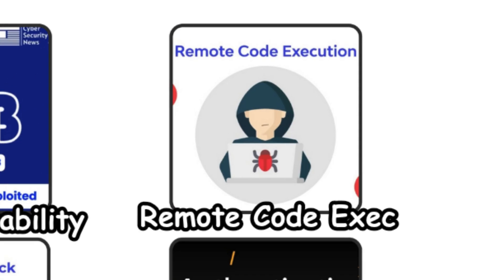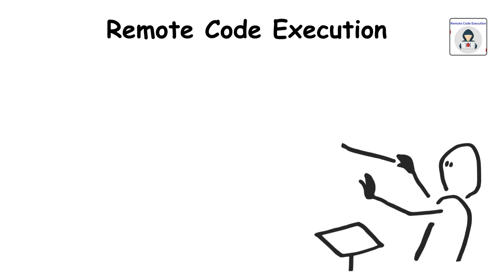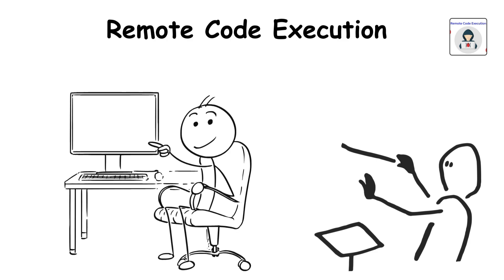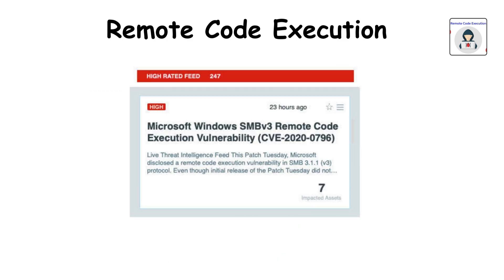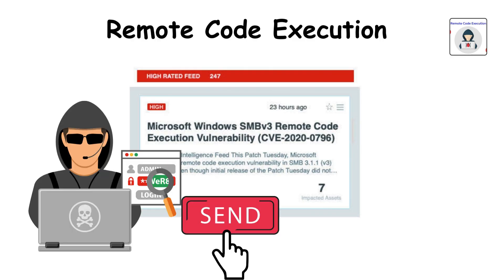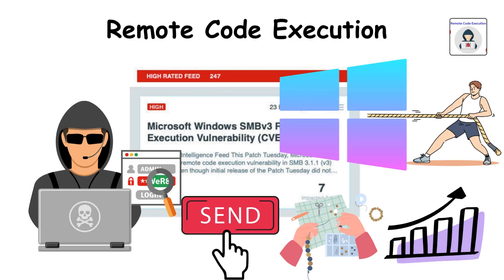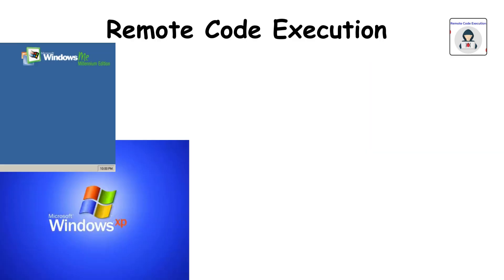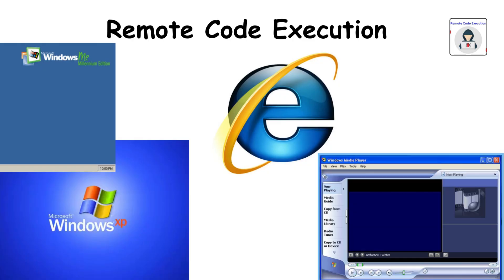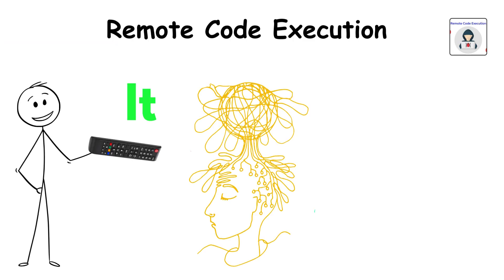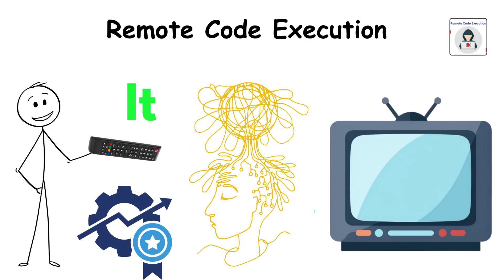Remote code execution. Think of a person controlling your computer from a place you cannot see. Remote code execution flaws allow attackers to send crafted data that forces Windows to run unwanted commands. Many older Windows components, such as Internet Explorer and Media Player, had this weakness. It feels like someone using an invisible remote to operate your machine.